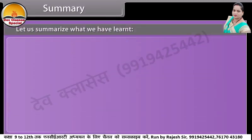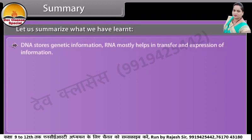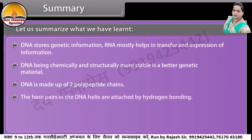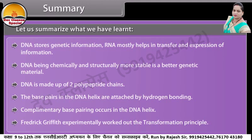Let us summarize what we have learned. DNA stores genetic information. RNA mostly helps in transfer and expression of information. DNA being chemically and structurally more stable is a better genetic material. DNA is made up of two polynucleotide chains. The base pairs in the DNA helix are attached by hydrogen bonding. Complementary base pairing occurs in the DNA helix. Frederick Griffith experimentally worked out the transformation principle.